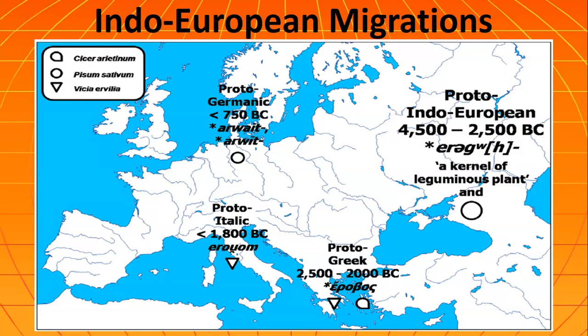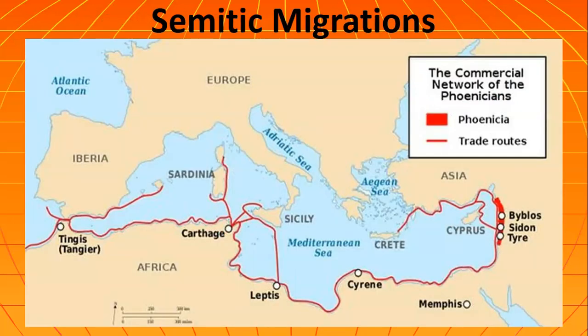Let's step back to the ancient period and remind ourselves that the Greeks are descendants of the Indo-Europeans, the third wave of migrants who ended up moving into what is now Greece. They are also heavily influenced by the Semitic migrations, particularly the Phoenicians. The Phoenicians invented the alphabet and set up trade colonies throughout the Mediterranean, and that contact has a big influence on later Greek culture.